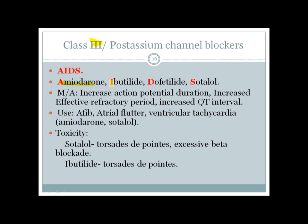Class 3 agents increase action potential duration, effective refractory period, and QT interval. There is a resemblance between class 1a and class 3 agents in their ultimate effects — both increase action potential duration, effective refractory period, and QT interval — but the mechanism differs: class 3 blocks potassium channels while class 1a blocks sodium channels.